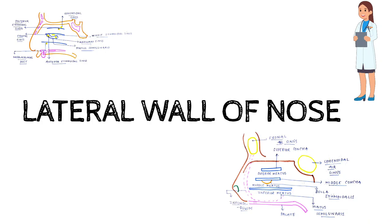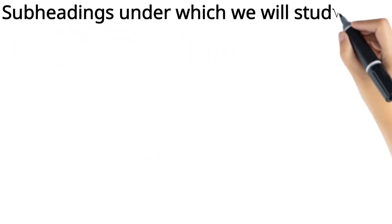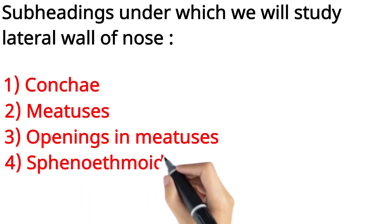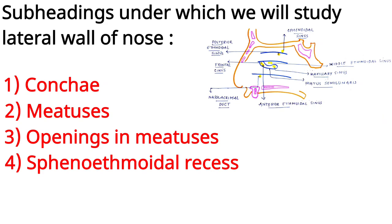To start with, I am going to tell you some features about the lateral wall of nose — what it is made up of — and then we will move on to the important structure, the conchae of the nose. Conchae are present on the lateral wall of nose and are also known as nasal conchae. Then we will move on to the meatuses of the nose, the different nasal meatuses present on the lateral wall, and then we will see a very important structure known as the sphenoethmoidal recess.